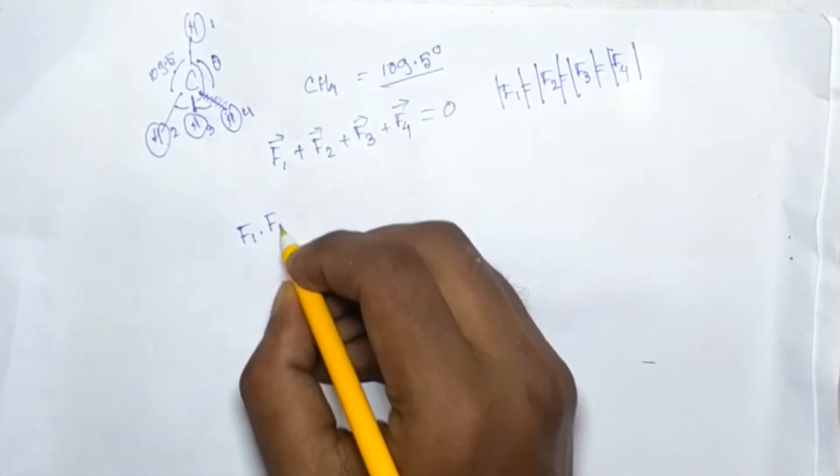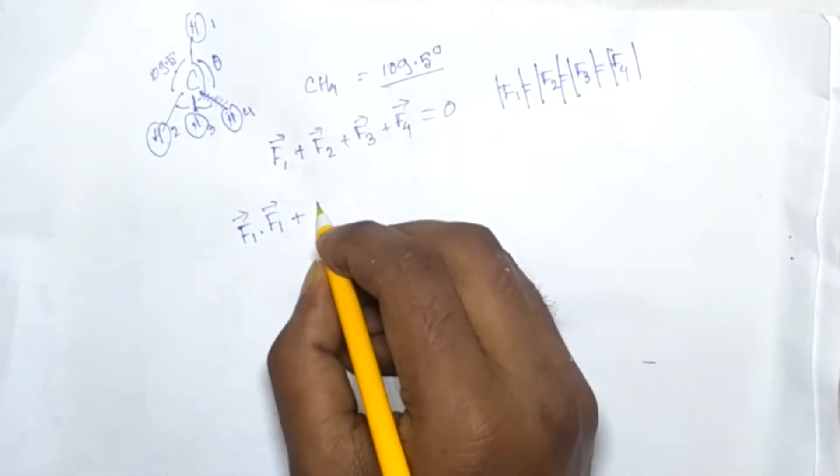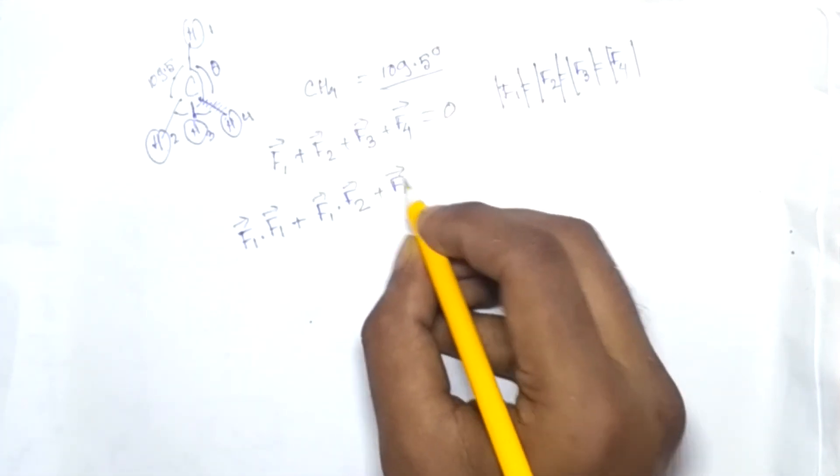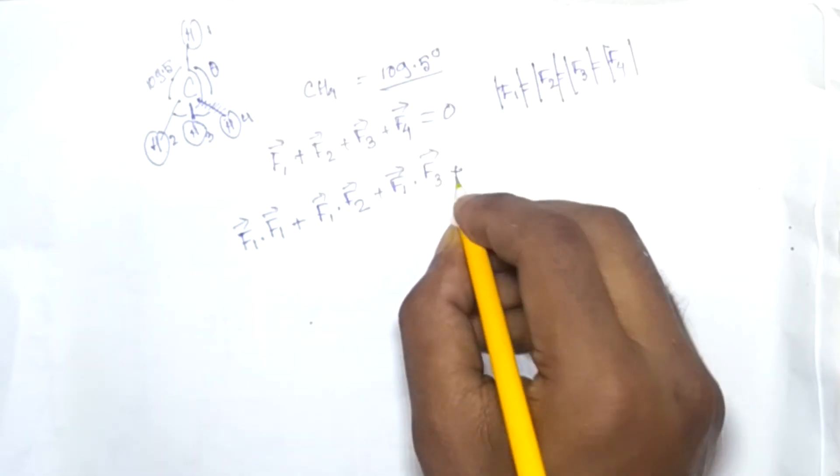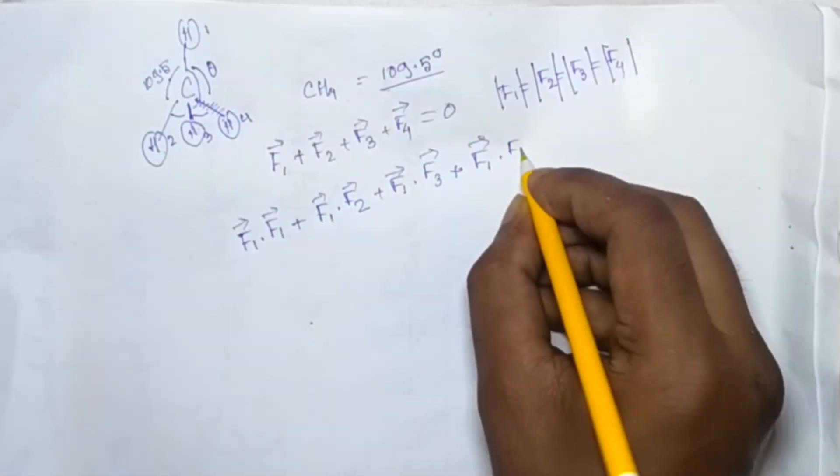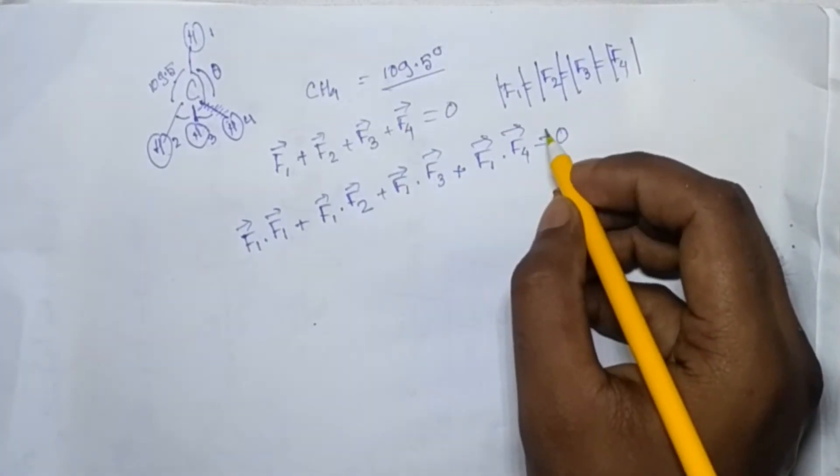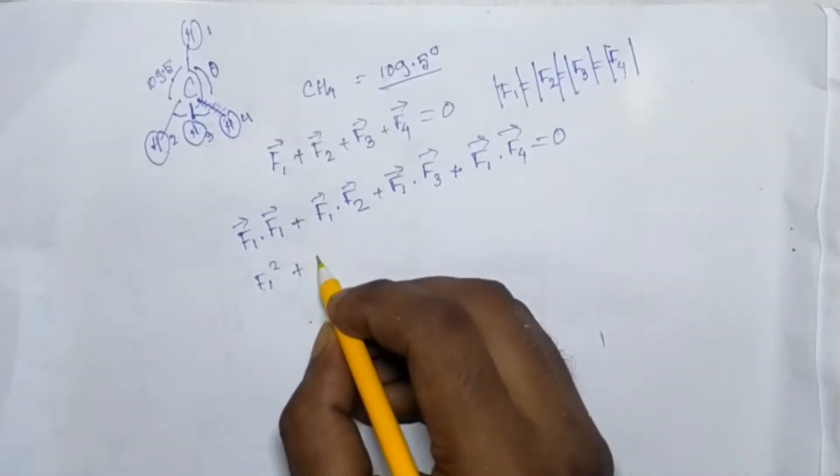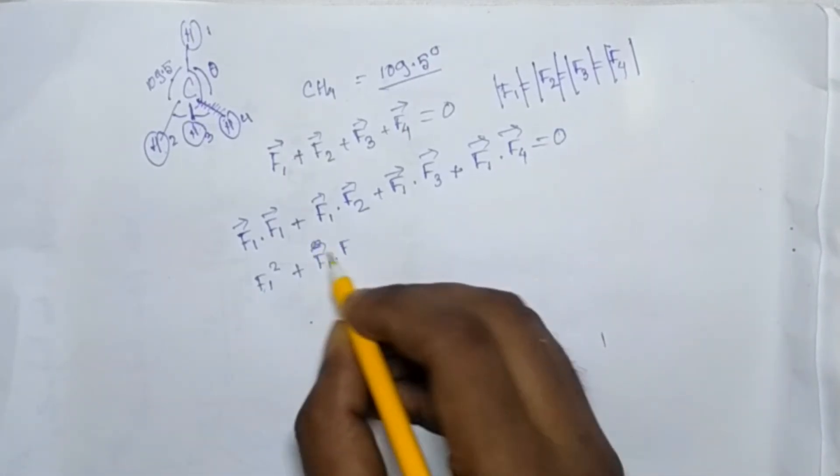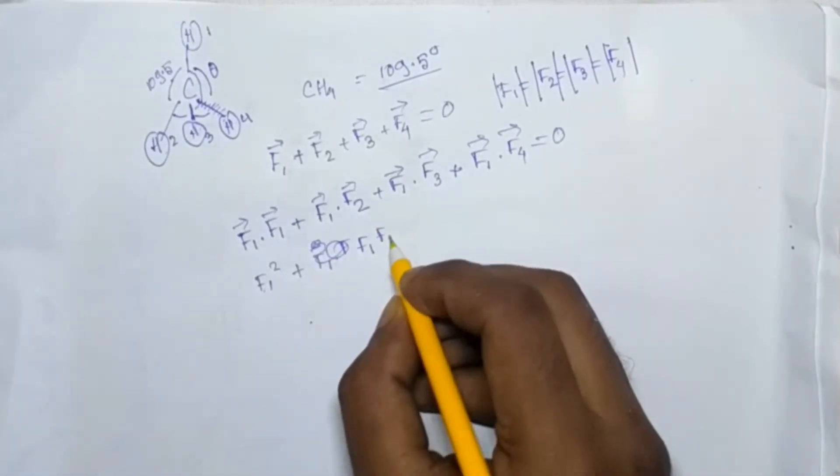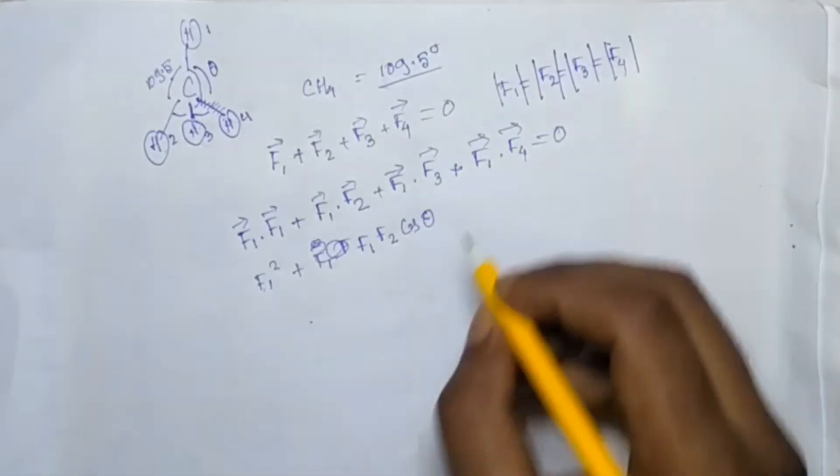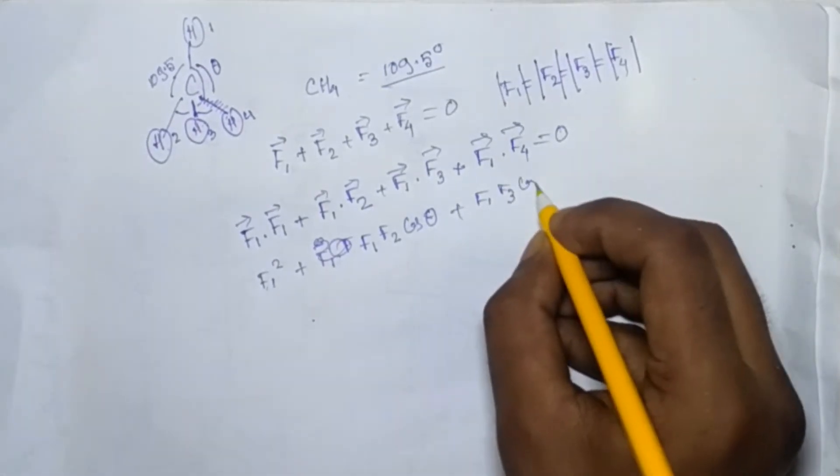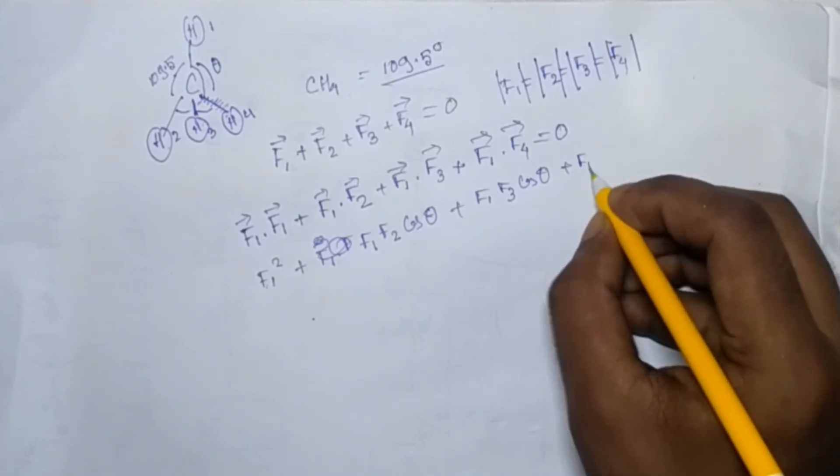Now I'm multiplying F1 by another F1, and then F1 by F2, and then F1 dot F3, and then F1 dot F4. So I'm just multiplying this whole quantity with F1. Now this will be F1 dot F1, this will be F1 dot F2, basically F1 F2 cos theta plus F1 F3 cos theta plus F1 F4 cos theta.